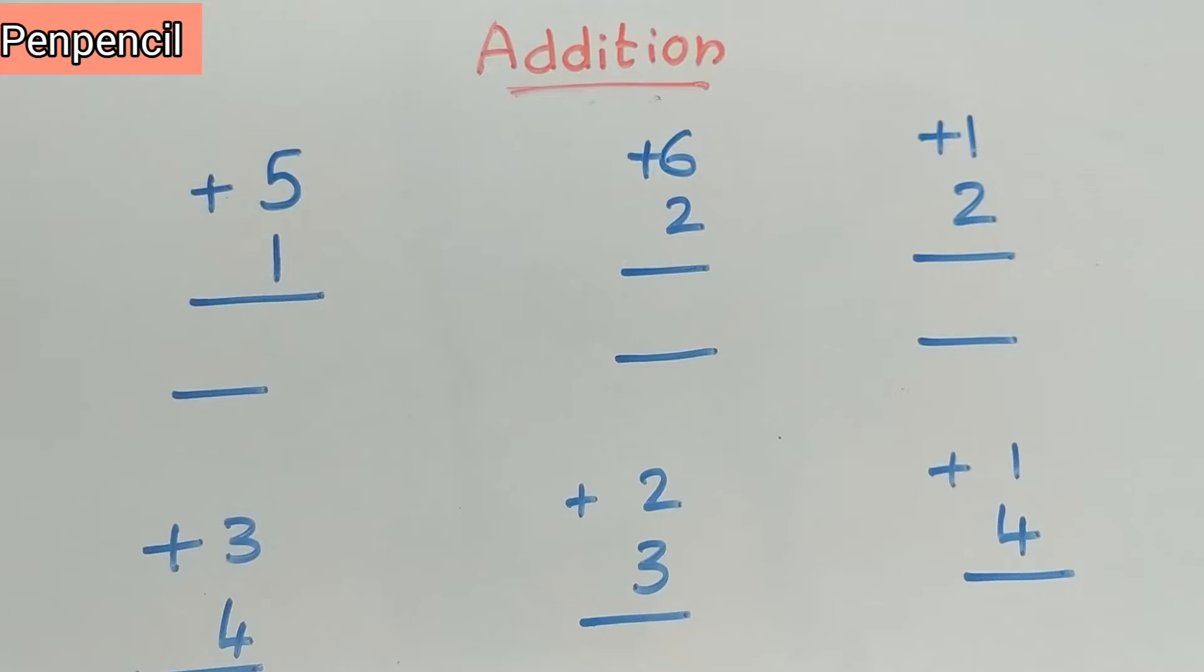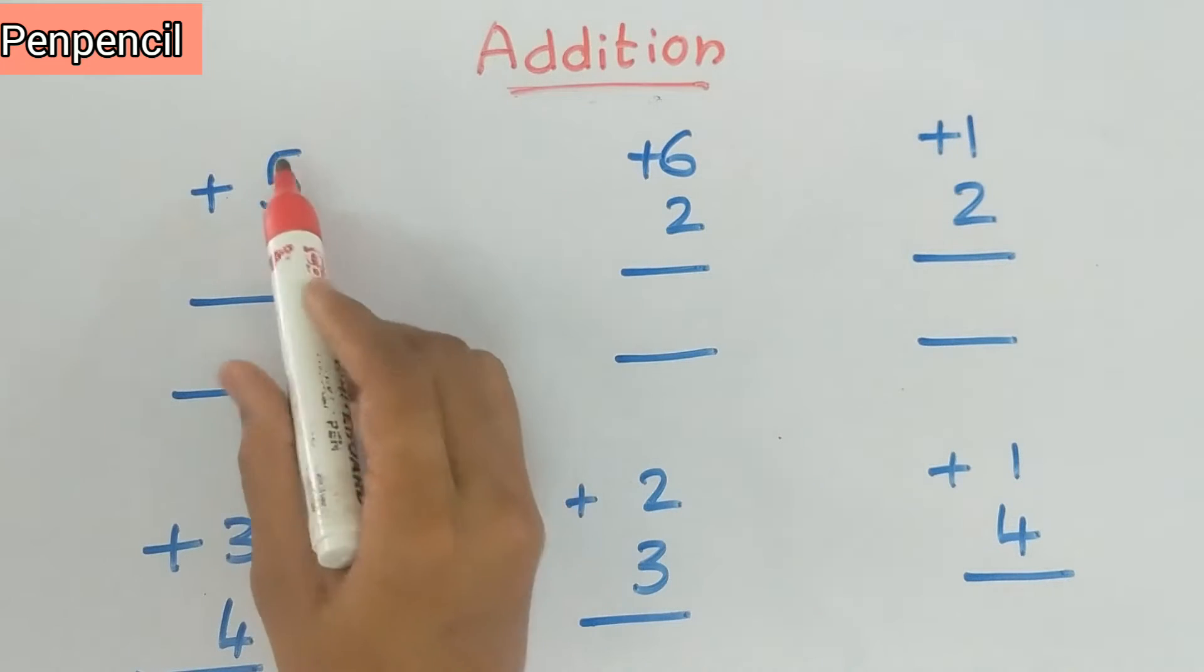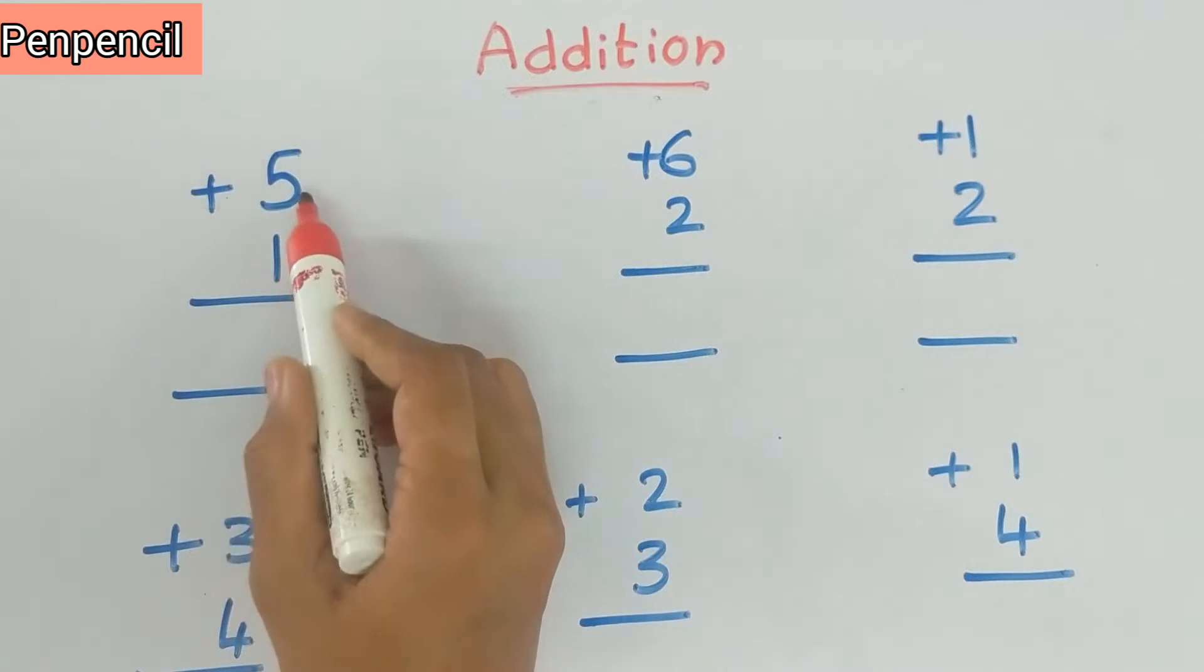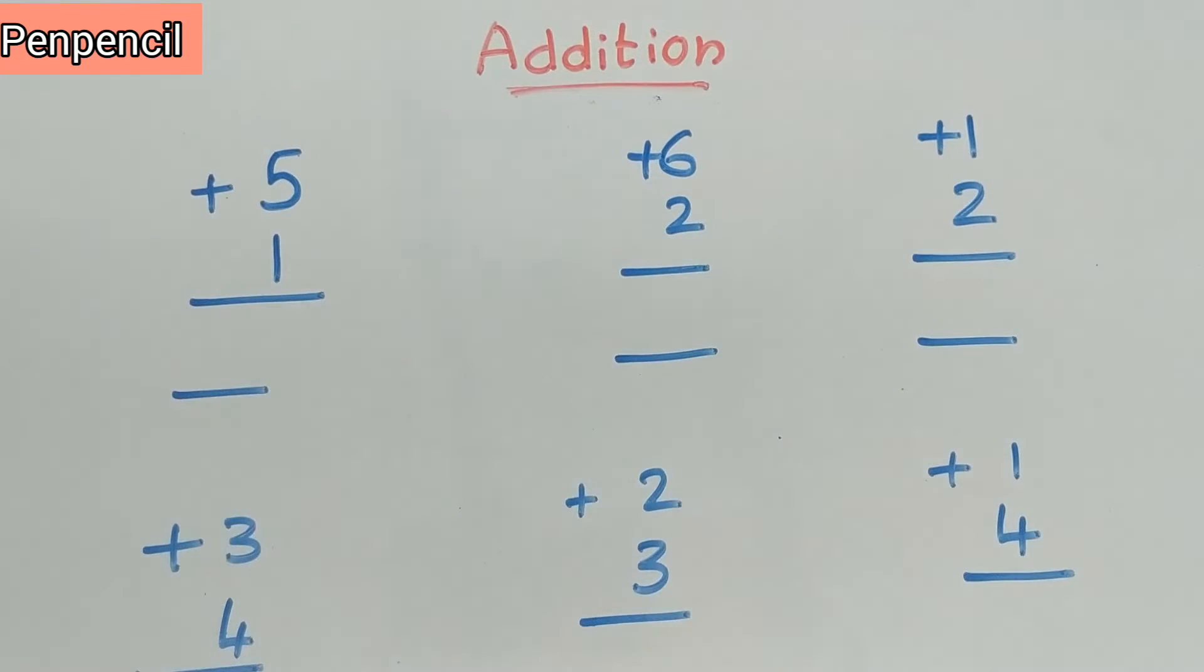Additions in the old method. We'll just see the additions in the old method. You can also do in this way. Initially everyone used to do it this way. What is this method? We'll learn. What is addition? We have to add both the numbers, then you'll be getting the sum.